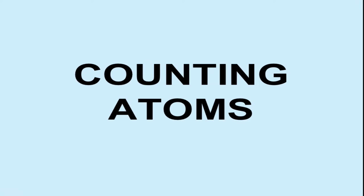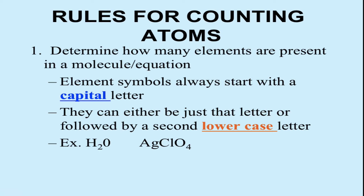So counting atoms — we're going to talk about the rules we need to use first. Rule number one is to help you see what's going on: how many different elements do we have in a particular compound? You guys know that element symbols start with capital letters.